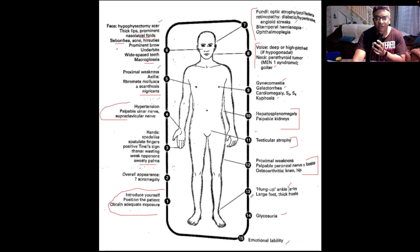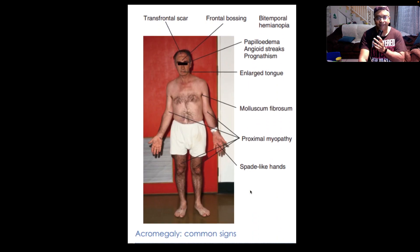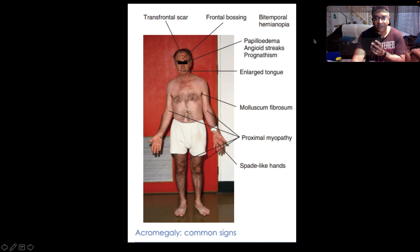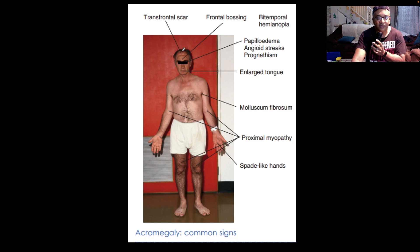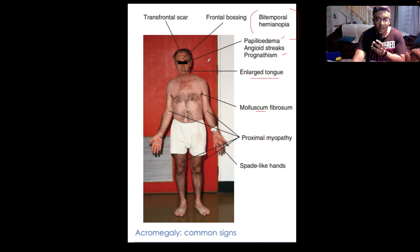So within this, we have a framework for thinking through how to examine acromegaly so that you're not going to miss any particular sign. This is another way of representing it: transfrontal scar, frontal bossing, bitemporal hemianopia — the classic visual field cut with an enlarged pituitary mass — papilledema, angioid streaks, prognathism, enlarged tongue, molluscum fibrosum, proximal weakness in both pelvic and pectoral girdle, and spade-like hands.